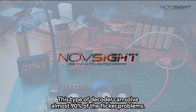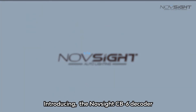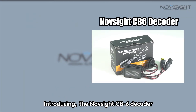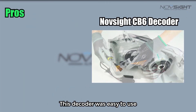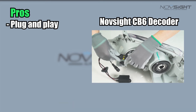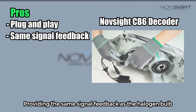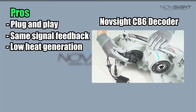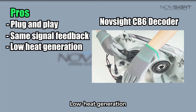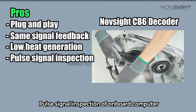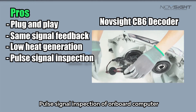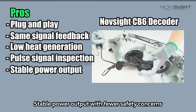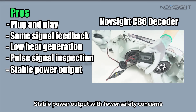Introducing the Novesite CB6 decoder. This decoder is easy to use, providing the same signal feedback as a halogen bulb, low heat generation, pulse signal inspection of the onboard computer, stable power output, and fewer safety concerns.